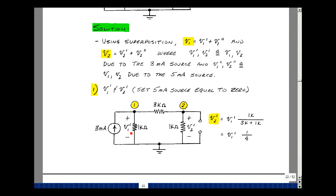My prime result will be due to the 3 milliamp source with the 5 milliamp set equal to 0, which is an open circuit. I'm going to call this V1 prime and V2 prime. It's not my final answer. It's one piece of a summation.